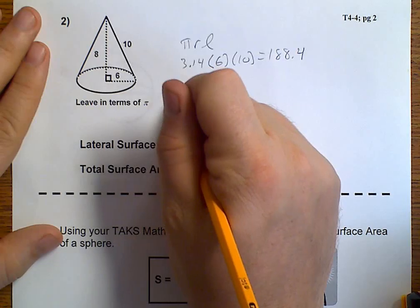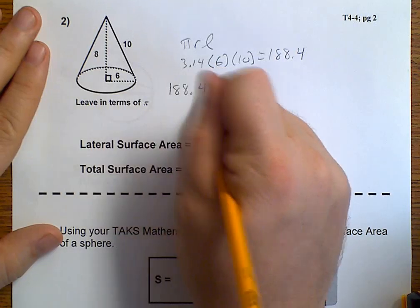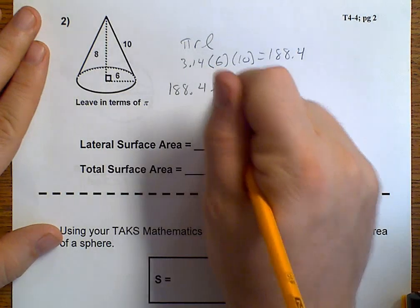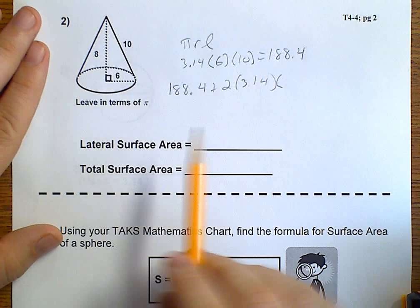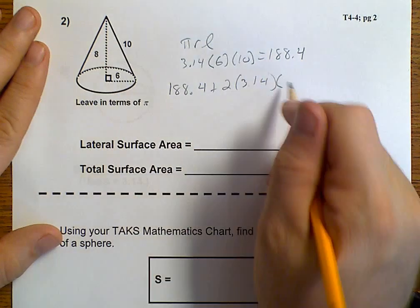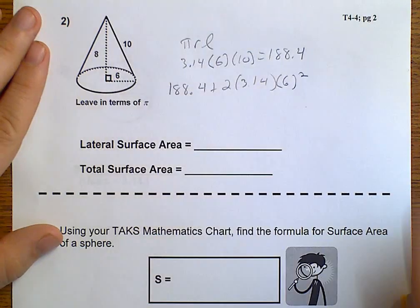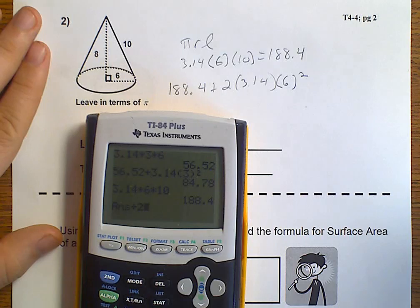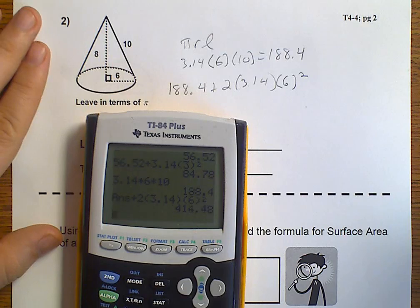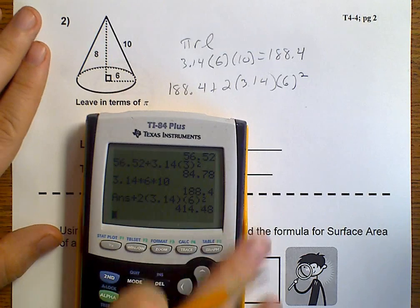Then for our total, we're going to start with 188.4 and add pi times our radius of 6 squared. So, we're going to add 2 times 3.14 times 6 squared. And that gives us 414.48.